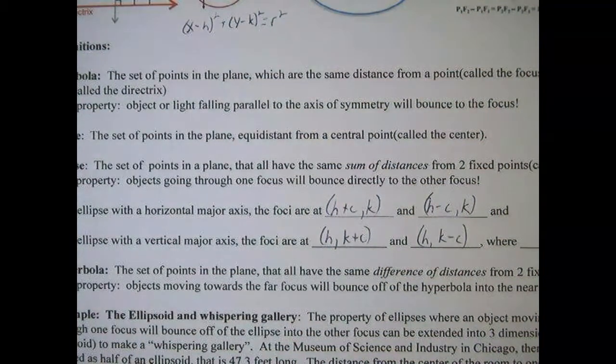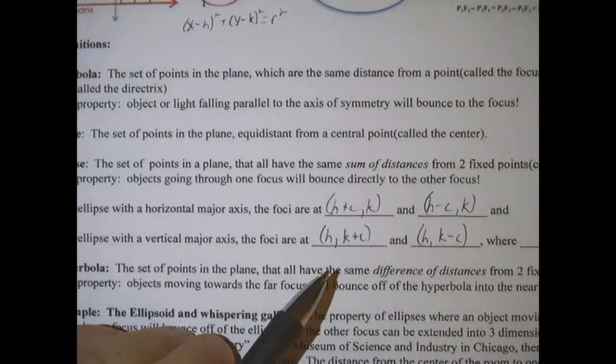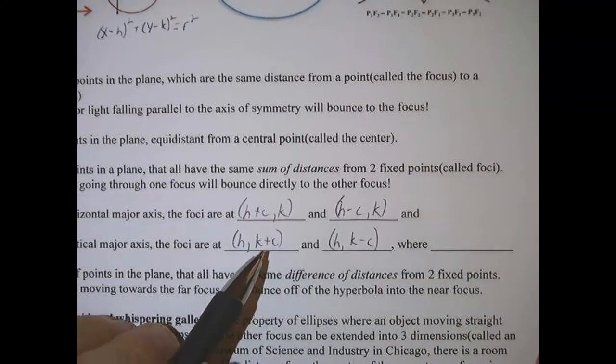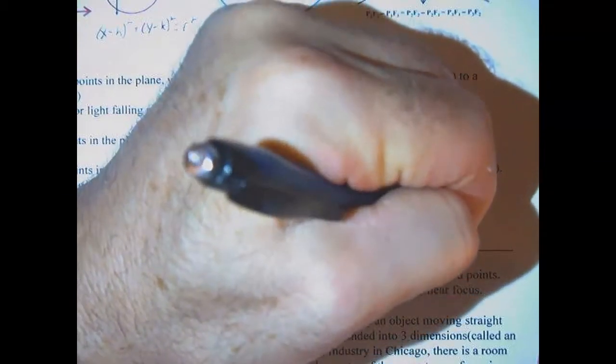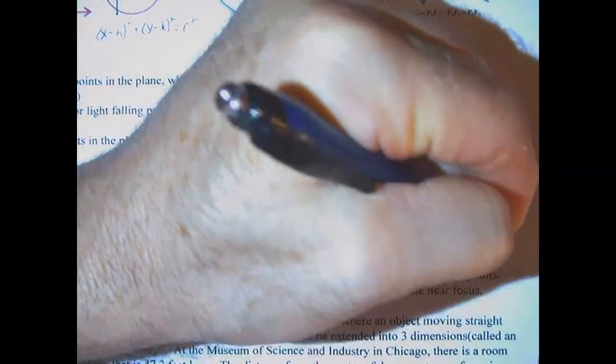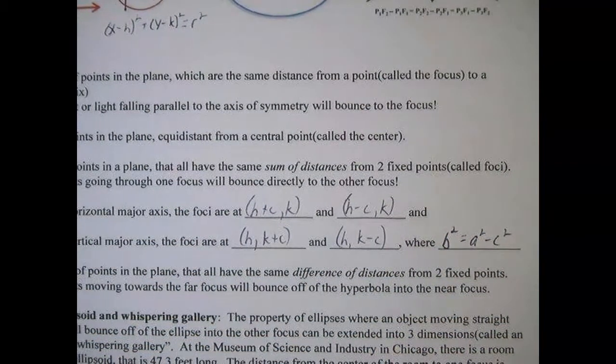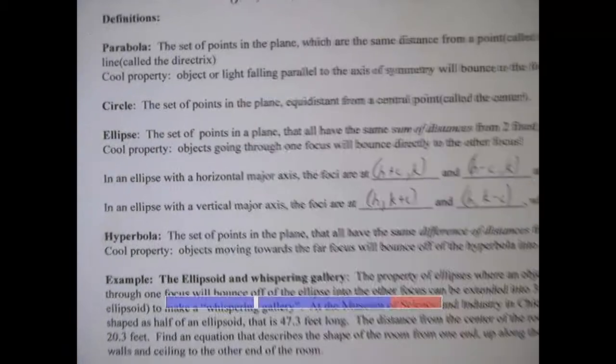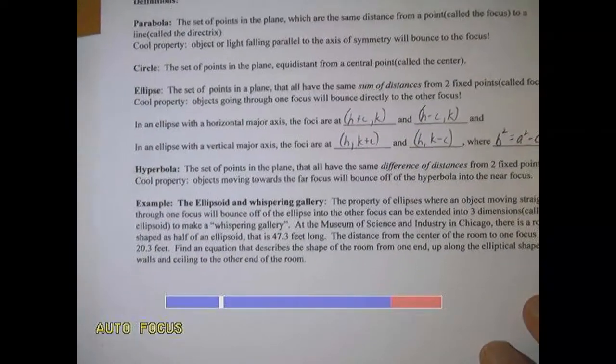So we know about a and b, but we don't know anything about c, so I'm just going to tell you without really explaining so much about why this works, but the relationship between a, b, and c is that b squared is equal to a squared minus c squared.